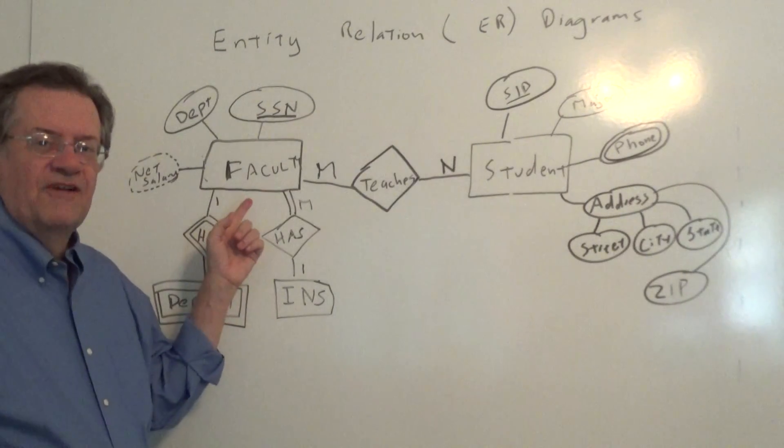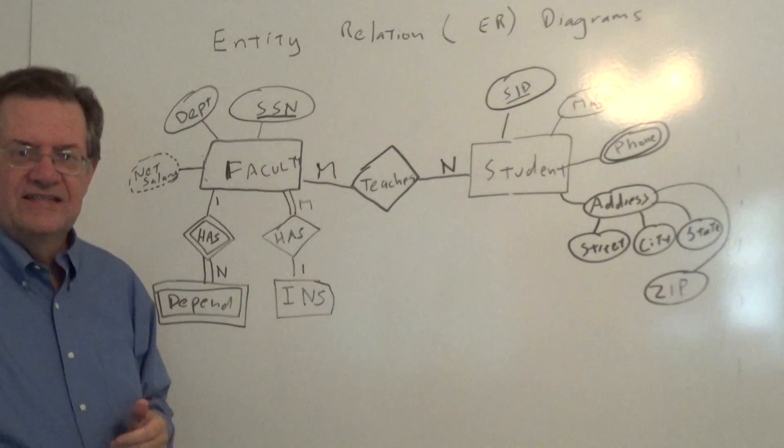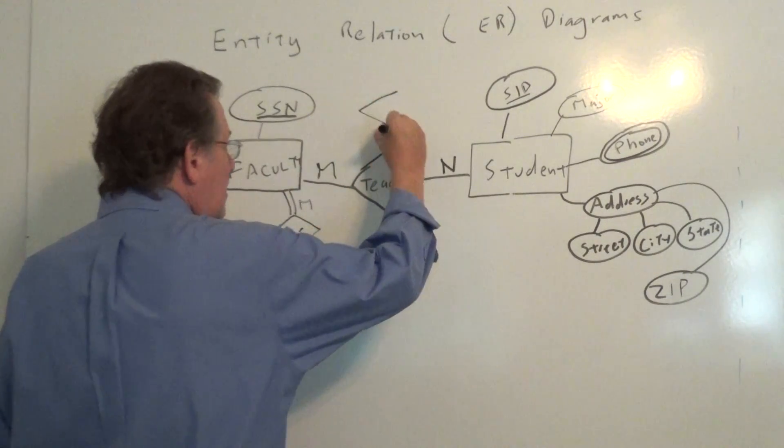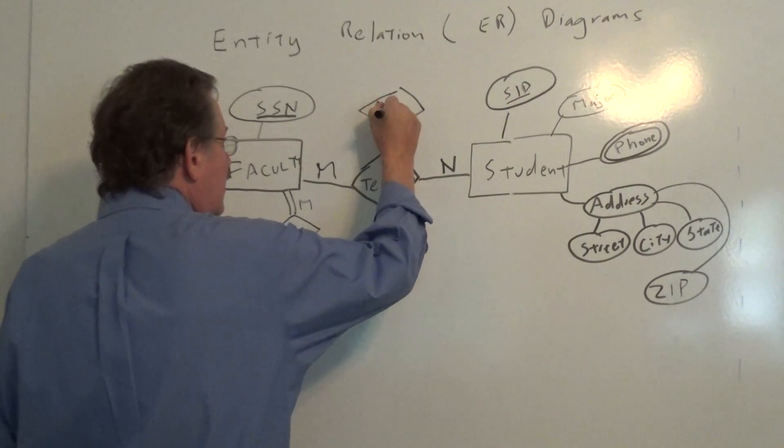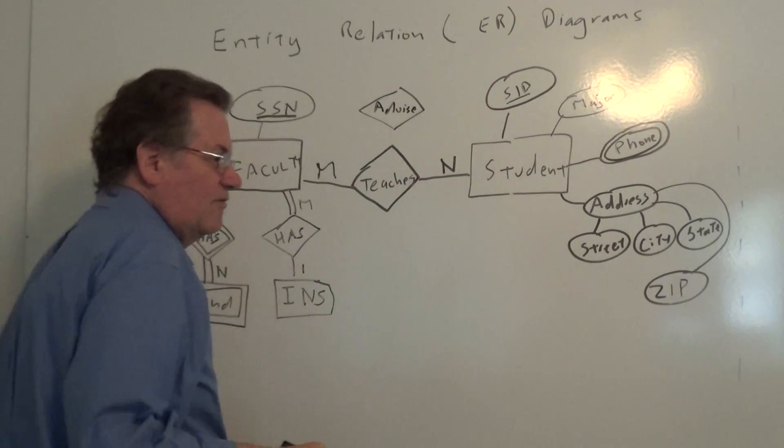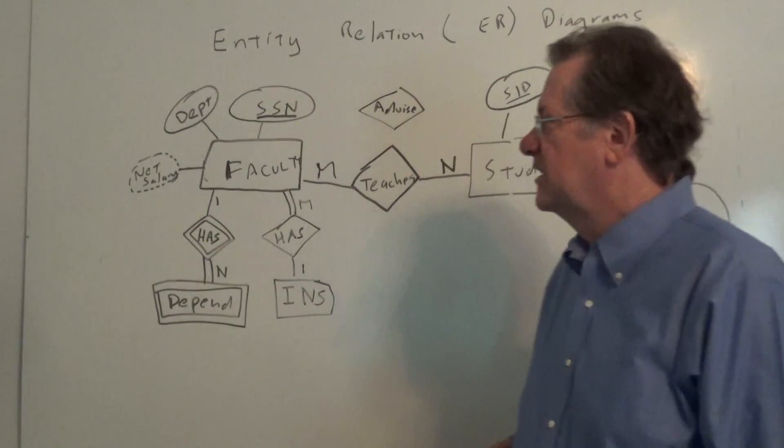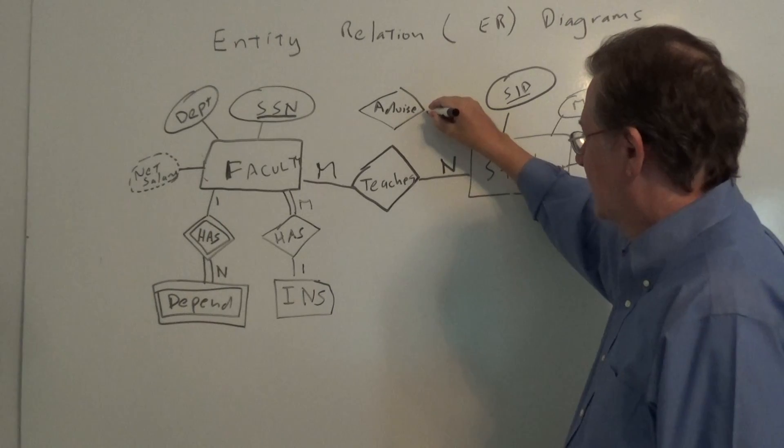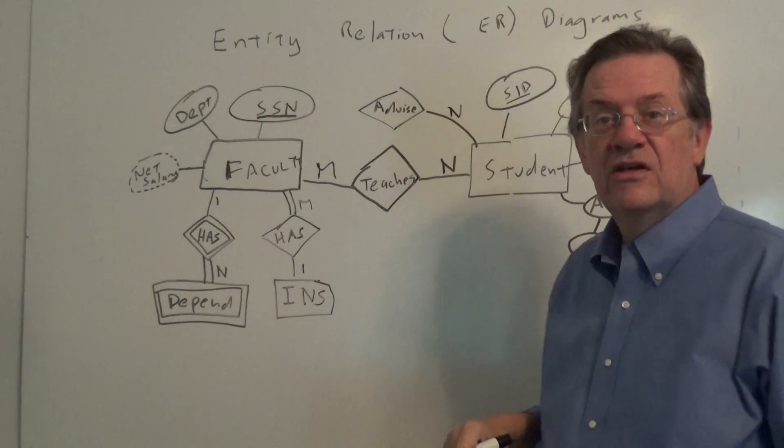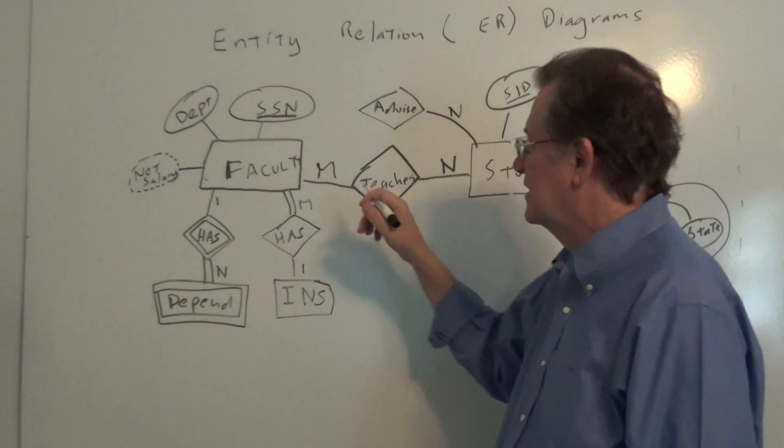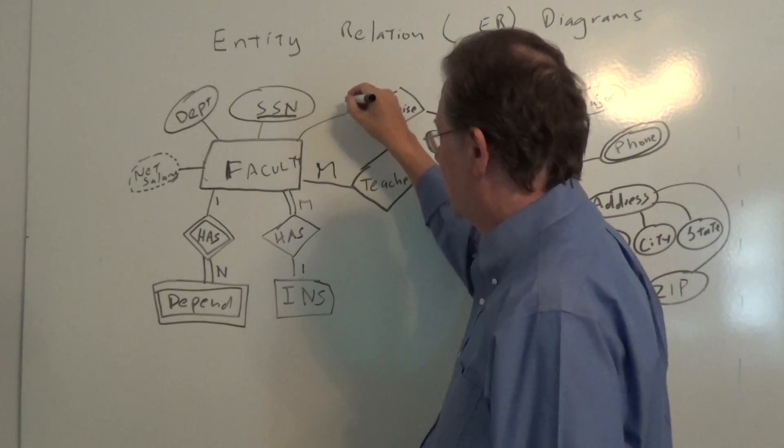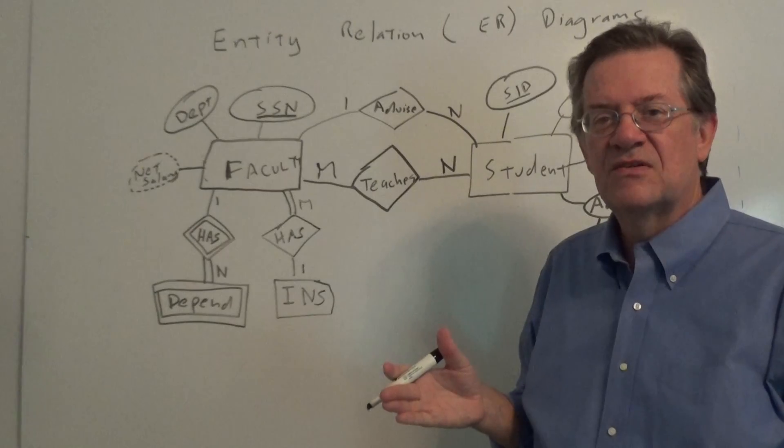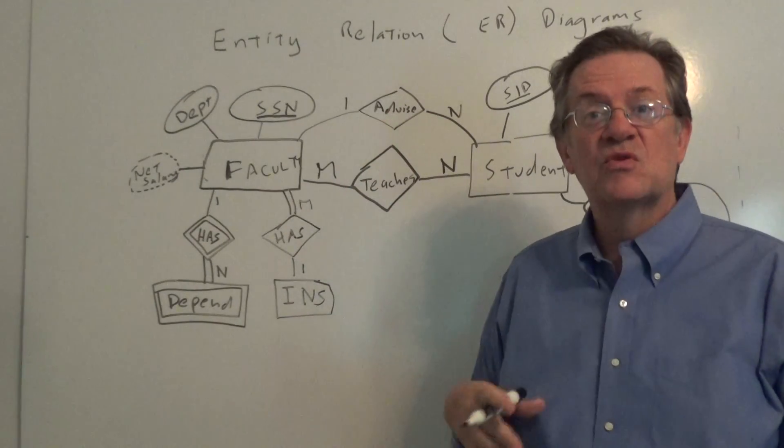Well coming back to faculty and student, we have faculty teach students, but we would also have a relation where faculty advise students. And in the case of faculty advise students, a faculty member might advise more than one student. And then likewise, a student might be advised by one faculty member. Now we could get into a discussion, say well, what if a student is multiple major, they might have more than one advisor, which is possible.